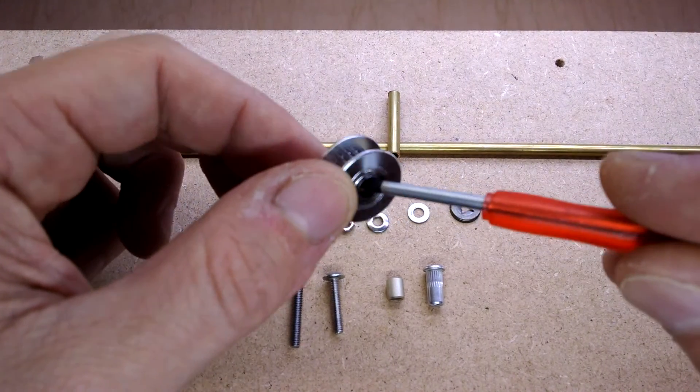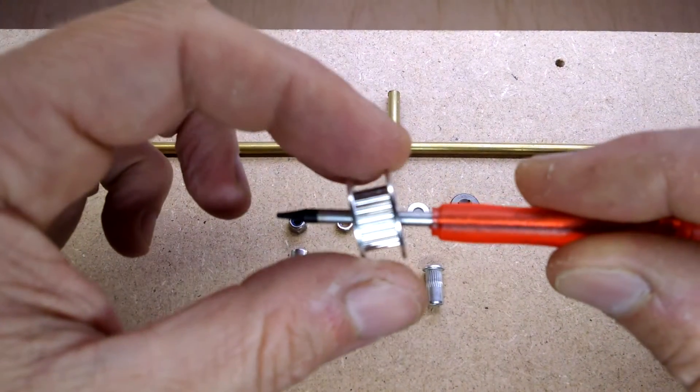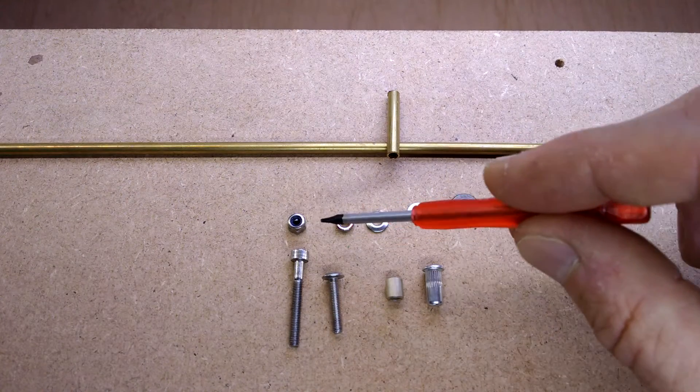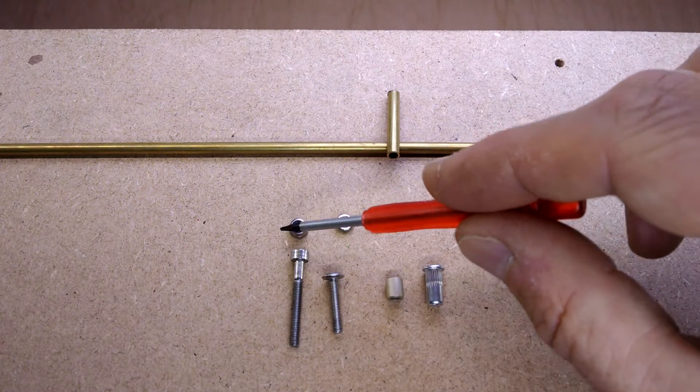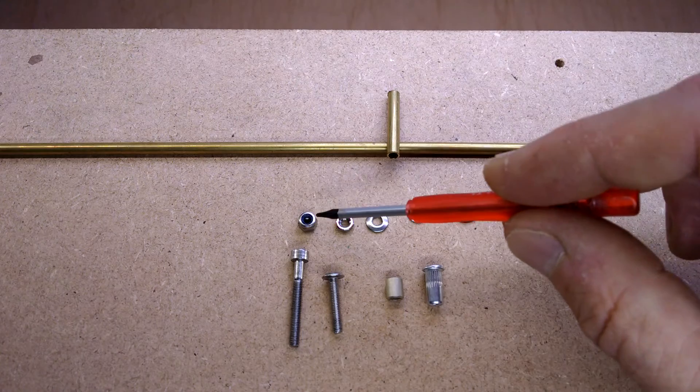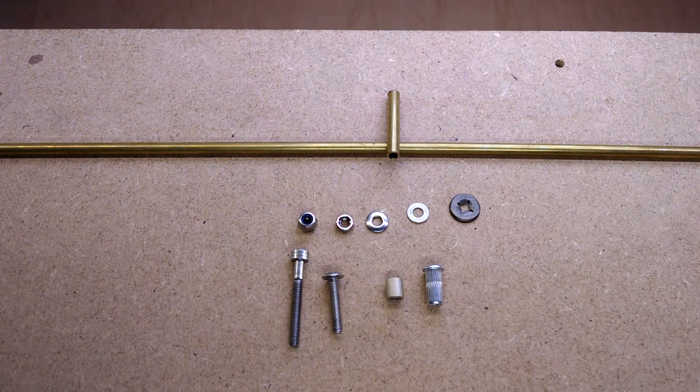One of the guys down in the comments suggested using the nyloc nuts because these things here have a nice little proud radius and don't have the hex corners sticking out. So I thought I'd look into it and see what worked for me.